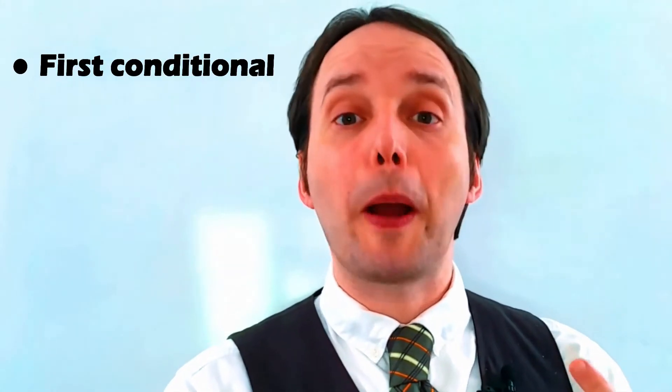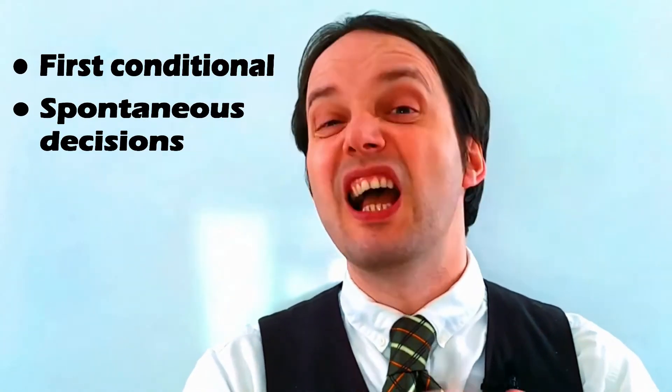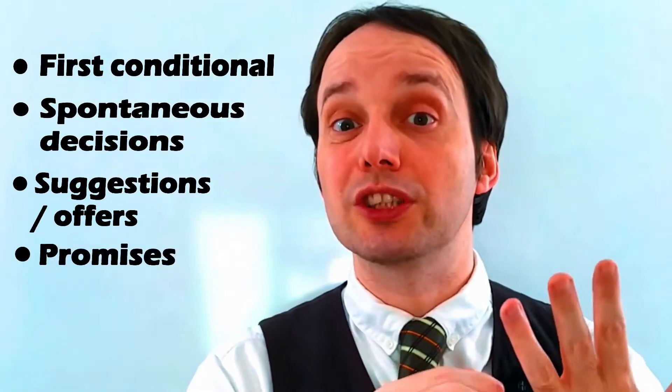The first one is when we make a first conditional sentence — I've already made a video about that, so please check it for more information. The second function is spontaneous decisions. The third job of future simple is when we make suggestions or offers. We also use future simple to make promises, and to make predictions about the future. So you can see future simple is a very busy tense with a lot of different jobs, and it's very important for you as a student to really understand these functions so you don't make mistakes.